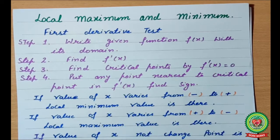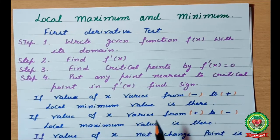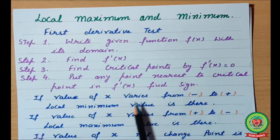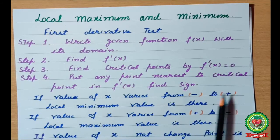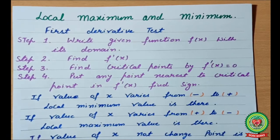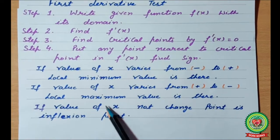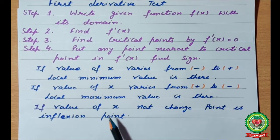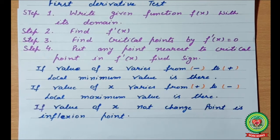If you put the value less than the critical point and it gives a negative result, and putting a value greater gives a positive result, then f'(x) moves from negative to positive, which means a local minimum value is there. If it moves from positive to negative, then a local maximum value is there. But if we have positive to positive or negative to negative, there is no change — that means an inflection point is there.